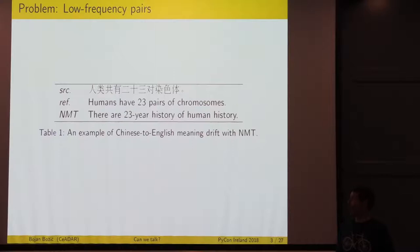Let me show you an example. One of the most interesting tasks in machine translation is translating Chinese. We have here a source text. What this basically means as a reference translation is that humans have 23 pairs of chromosomes. A very simple sentence, but most neural machine translation models would translate it as there are 23 year history of human history. We completely lose the chromosomes because it's a very infrequent word pair.